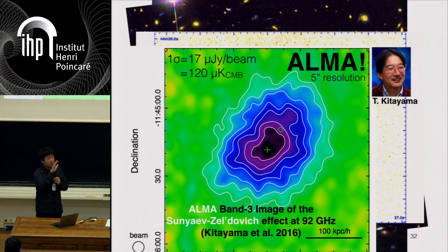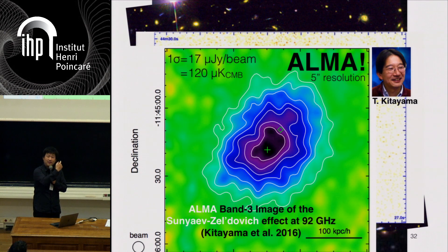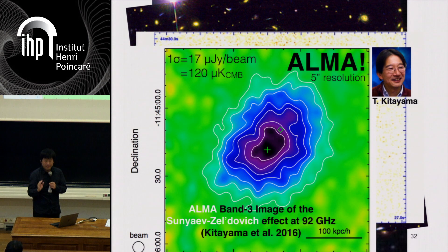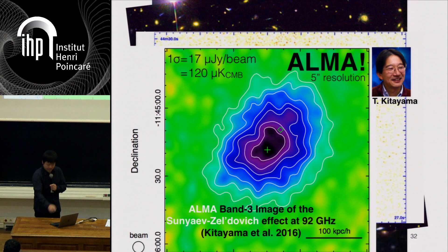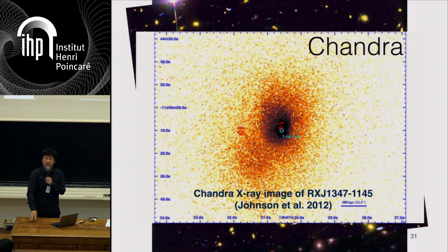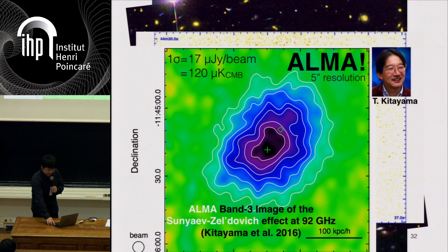People might associate ALMA with angular resolution, which is true, but for diffuse emission like this, the sensitivity is really tremendous. For the first time, the SZ image resolution is matching up with the resolution of the X-ray, so we can do lots of things with that.